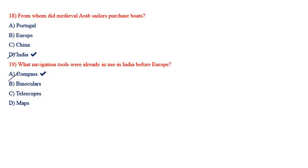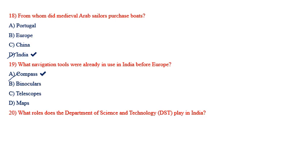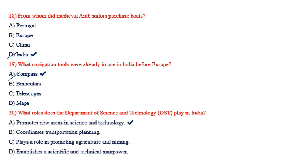What role does the Department of Science and Technology (DST) play in India? Options: promotes new areas in science and technology, coordinates transportation planning, plays a role in promoting agriculture and mining, establishes scientific and technical manpower. The answer is promotes new areas in science and technology.